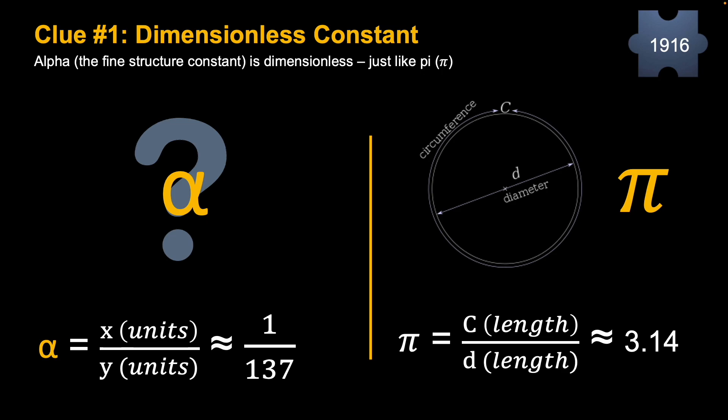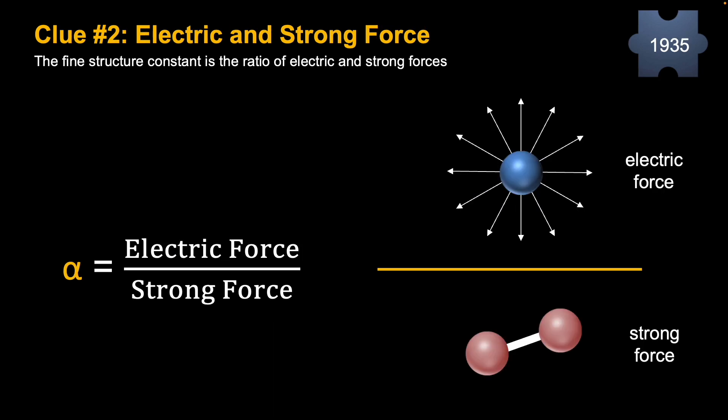So let's move on to clue number two: two forces cancel each other out. So it is a ratio of the electric force divided by the strong force. What's the electric force? Take a particle like the electron—it's the force that it has, which actually decreases in strength as it spreads out over distance, 360 degrees, or I should say three dimensions from that particle.